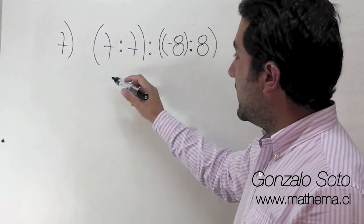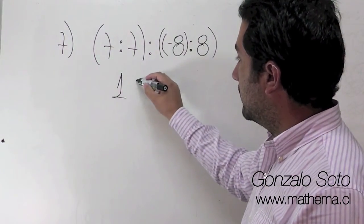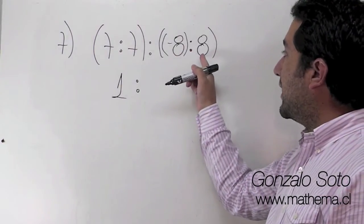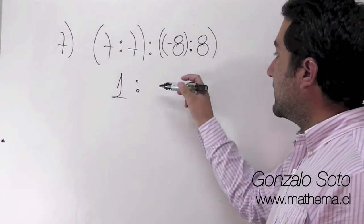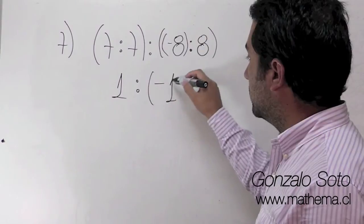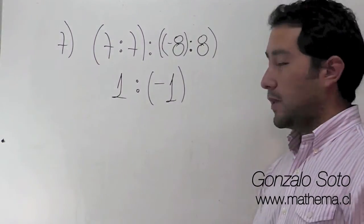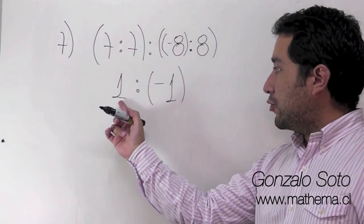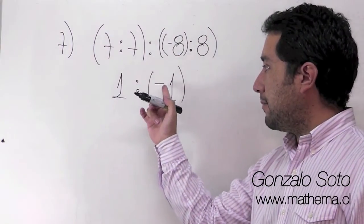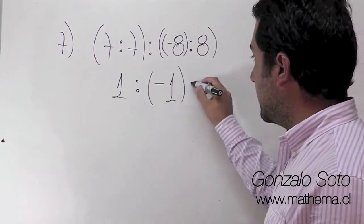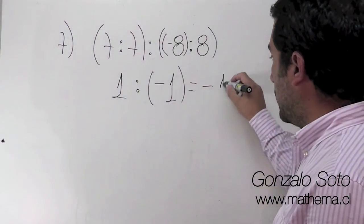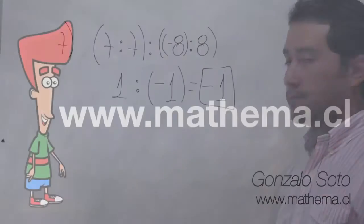7 dividido en 7 es 1, positivo. Menos 8 dividido en más 8: menos dividido en más es menos. 8 dividido en 8 es 1. ¿Qué tenemos? 1 dividido en menos 1. Más dividido en menos, el resultado es negativo. 1 dividido en menos 1.